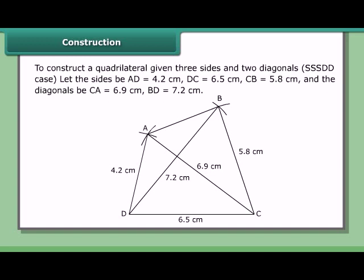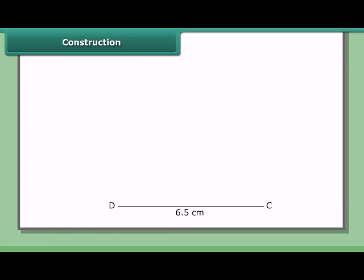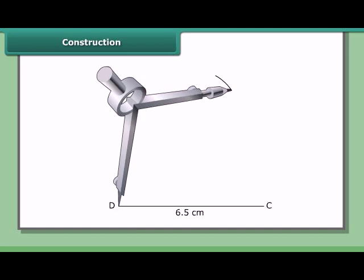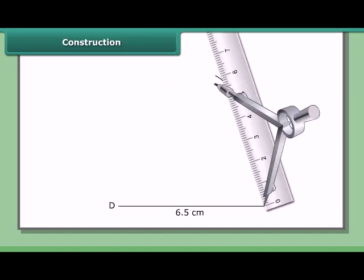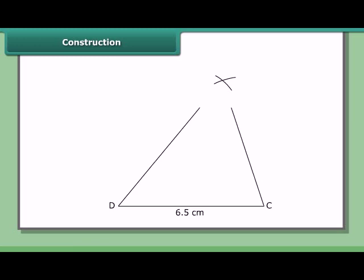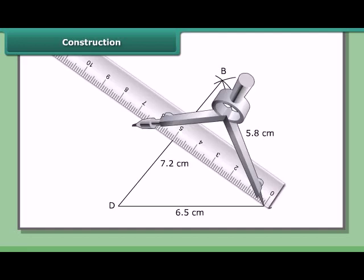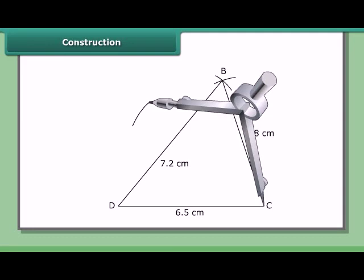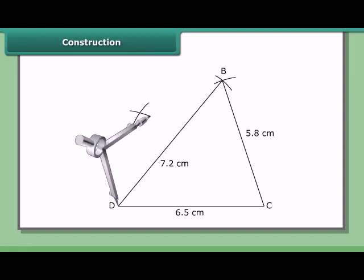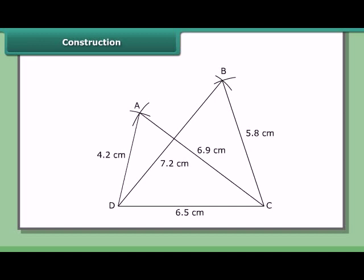The two triangles to construct are BCD and ACD. Constructing BCD: Draw DC = 6.5 cm. With D as center and radius 7.2 cm, draw an arc. With C as center and radius 5.8 cm, draw another arc to cut the previous arc at B. Join CB and DB. Constructing ACD: With C as center and radius 6.9 cm, draw an arc on the same side of DC. With D as center and radius 4.2 cm, draw another arc to cut at A. Join CA, DA, and AB. Then ABCD is the required quadrilateral with diagonals AC and BD.